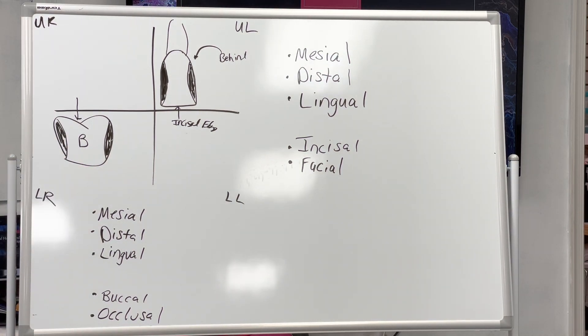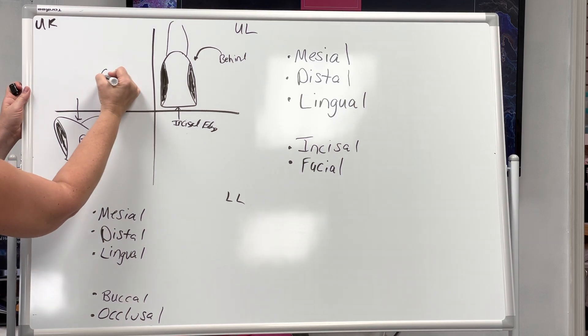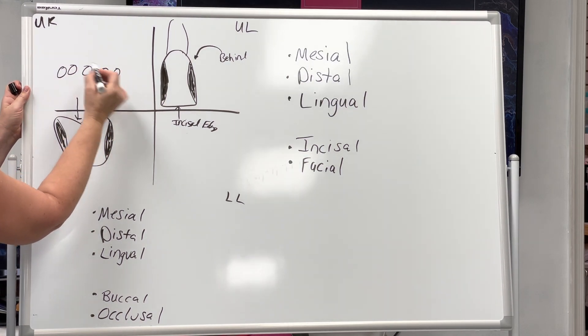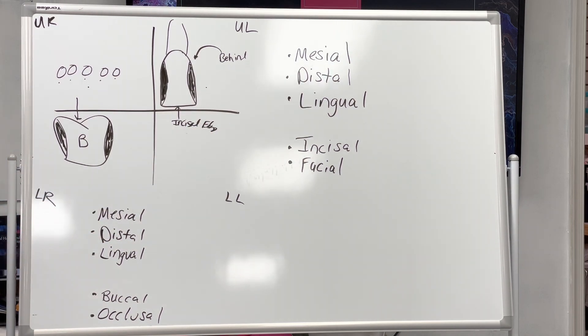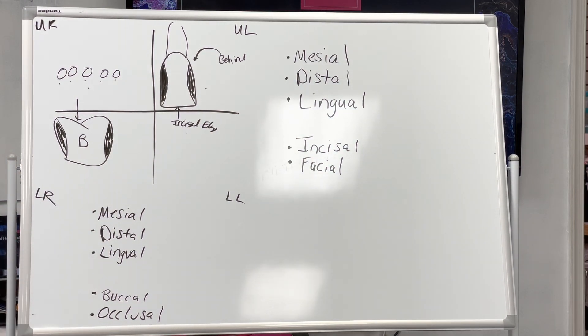Now, how many would there be for the posterior teeth, the premolars and the molars? Sixteen. Oh wait, hold on, never mind. Don't listen to me. Premolar, premolar, molar, molar, molar. One, two, three, four, five, five, ten, fifteen, twenty. Twenty. Somebody said twenty.